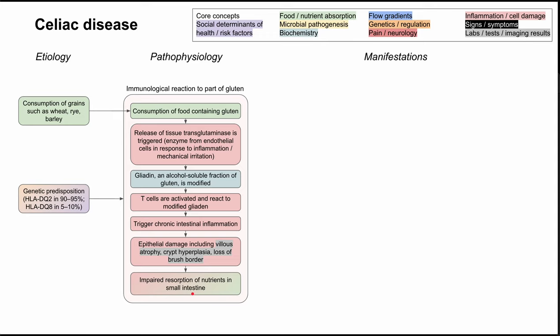A few words on the etiology. Foods containing gluten include grains like wheat, rye, or barley, and consumption of these can trigger this pathway and exacerbate symptoms in people with celiac disease. There's also been shown to be a genetic predisposition to this pathway. In the majority of cases it's HLA-DQ2, and in a minority of cases it's HLA-DQ8 that is related to celiac disease pathophysiology.